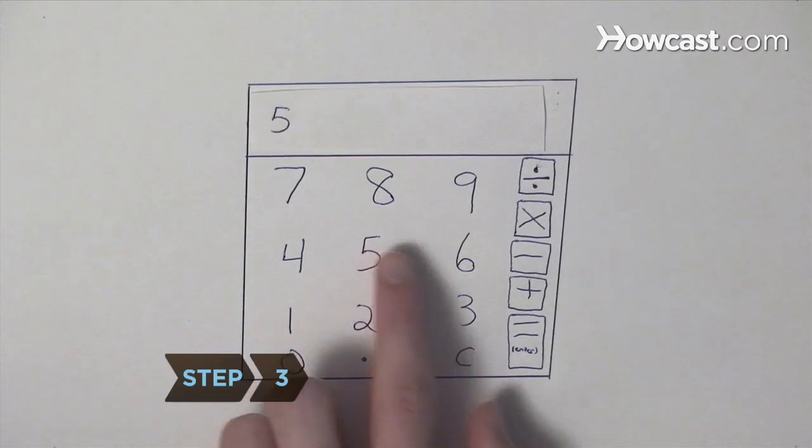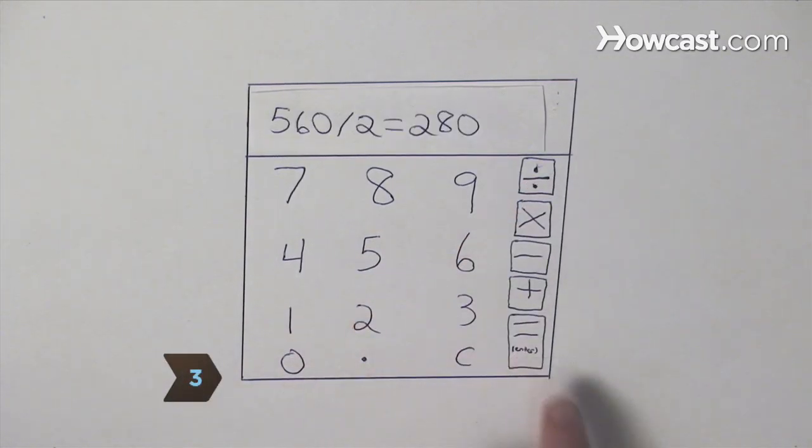Step 3. Divide the product by two. This is the area of the trapezoid.